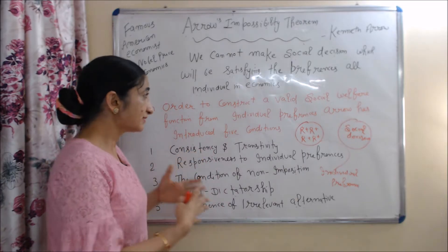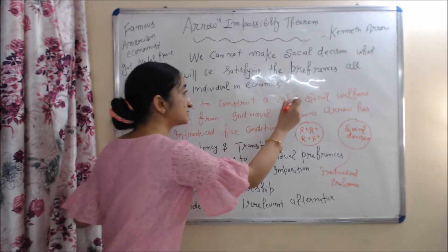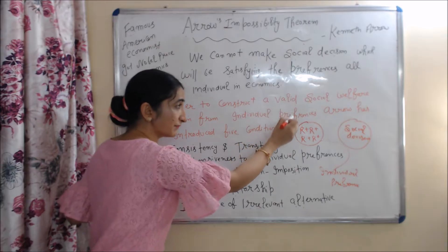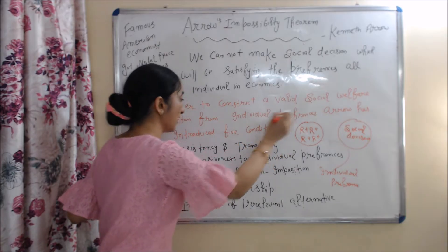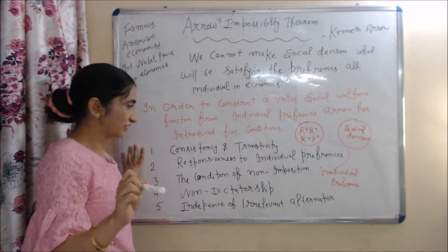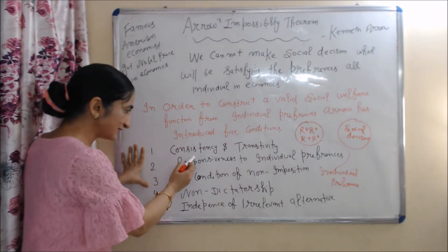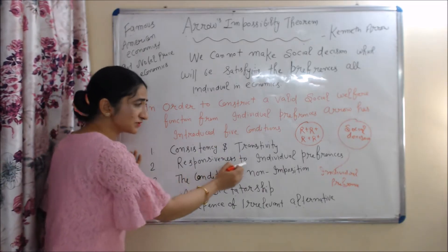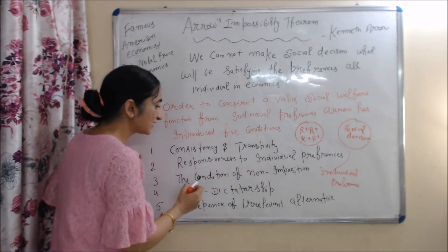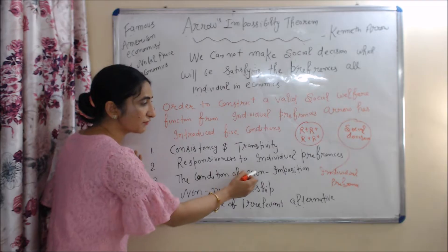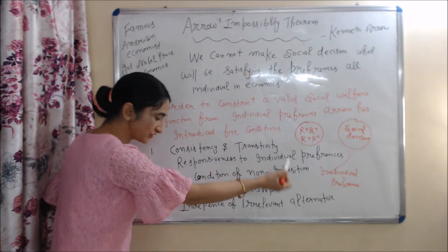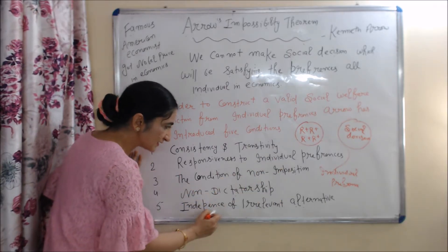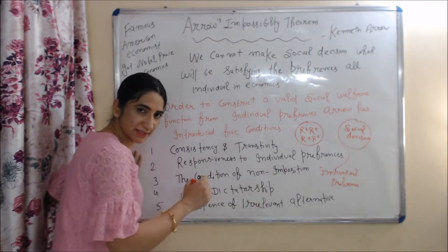In order to construct a valid social welfare function from individual preferences, Arrow introduced five conditions: consistency and transitivity, responsiveness to individual preferences, the condition of non-imposition, non-dictatorship, and independence of irrelevant alternatives.